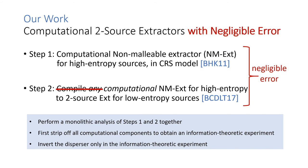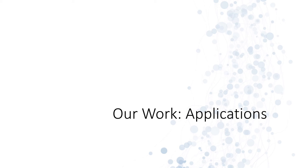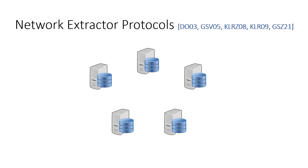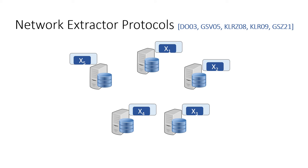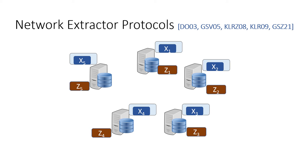In the rest of this talk, I'm going to talk about some of the applications of these techniques to other extractor settings. The first setting is that of network extractors. In a network extractor protocol, there is a set of processors that each have independent sources. They would like to communicate with each other, potentially in several rounds, such that at the end of this communication, they each end up with what is supposedly a uniformly random string.